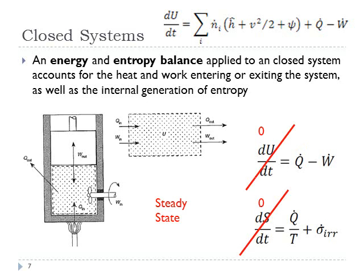If you're in steady state, you get very simple equations: Q-dot equals W-dot, and Q-dot over T equals minus sigma-dot-IRR. You can rearrange those to figure out how much work you're generating in the system.